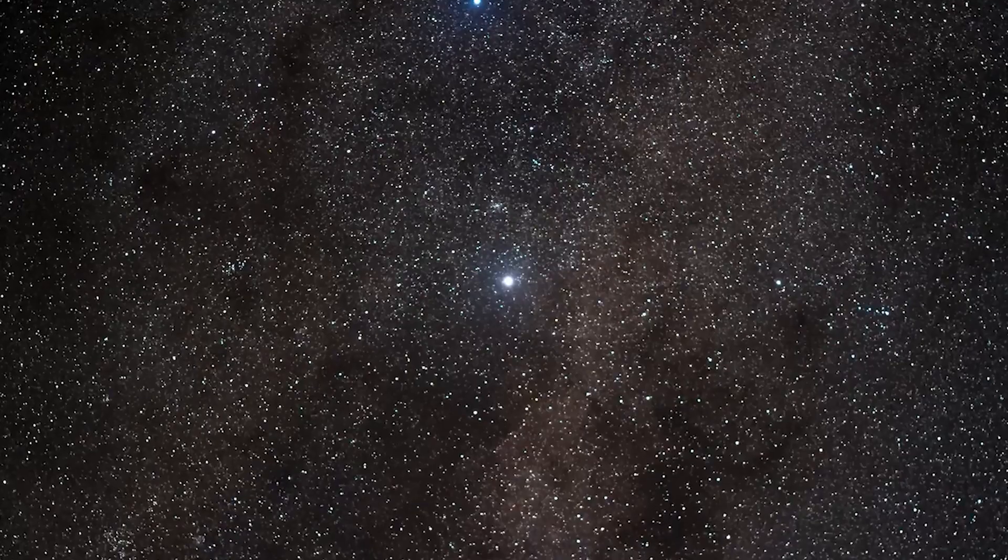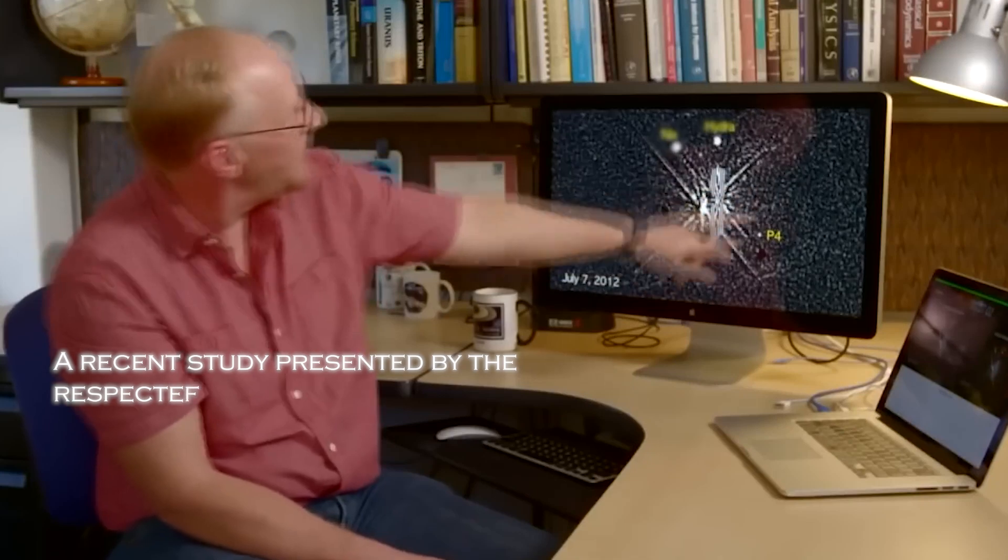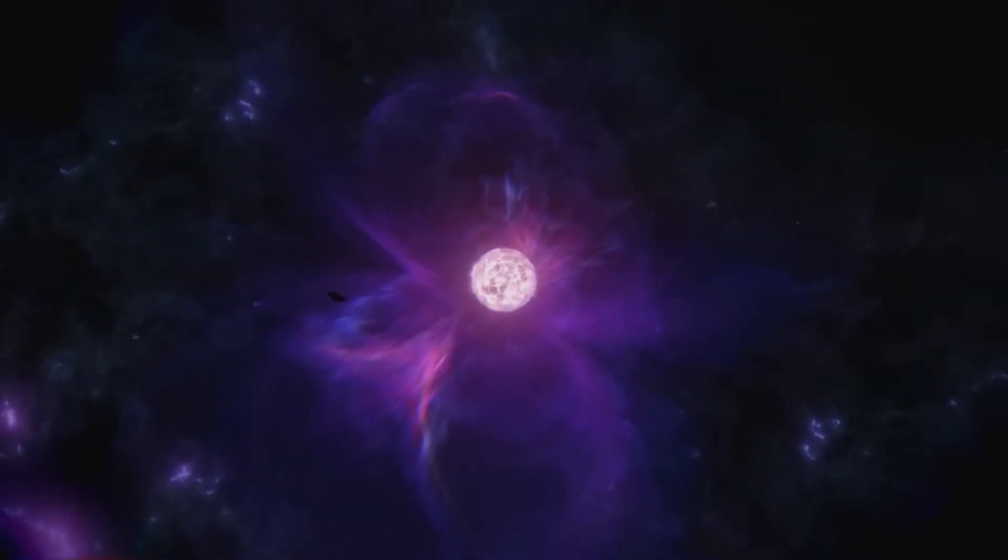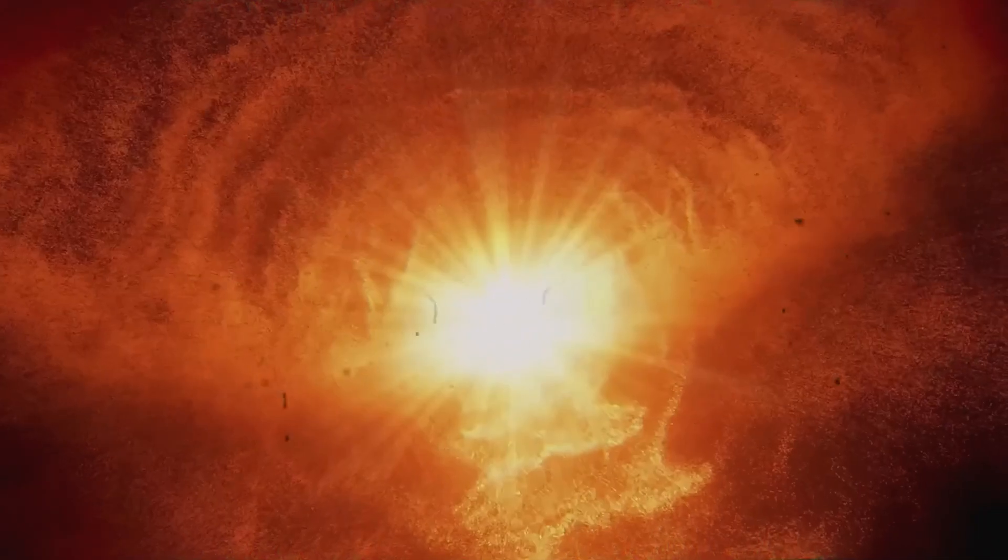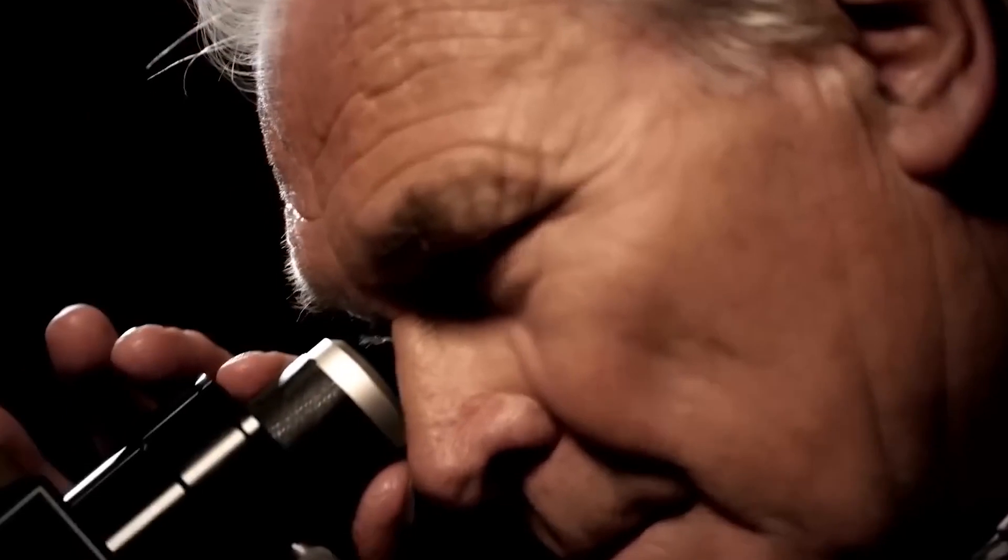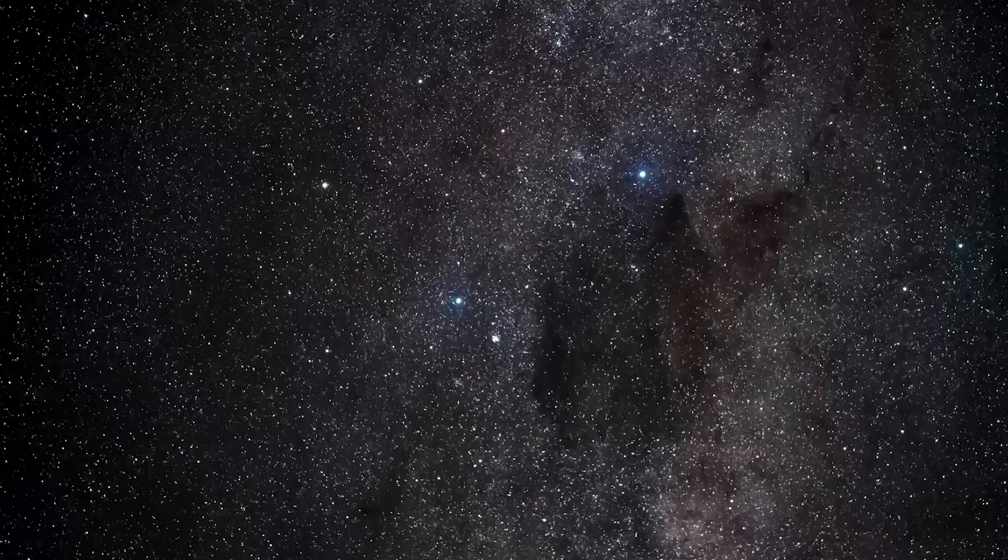However, all this could suddenly change. A recent study presented by the Royal Astronomical Society in September 2023 has raised uncertainty about the future of this bright star. Polaris is on the verge of an explosion that will cause it to disappear permanently from the night sky. Before we delve into the implications of this revelation, let's take a closer look at the star in question.